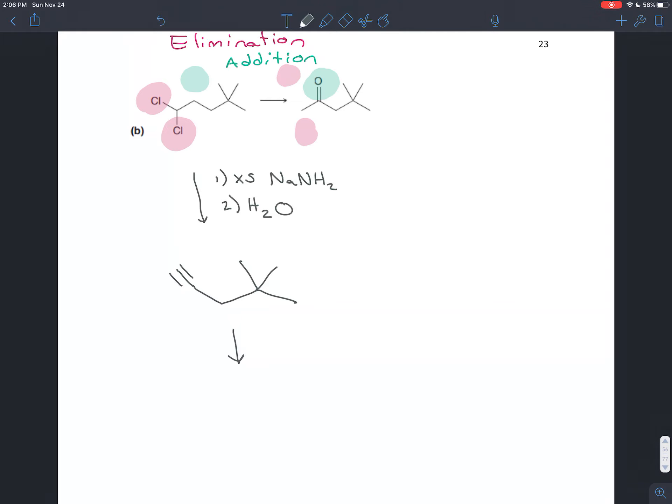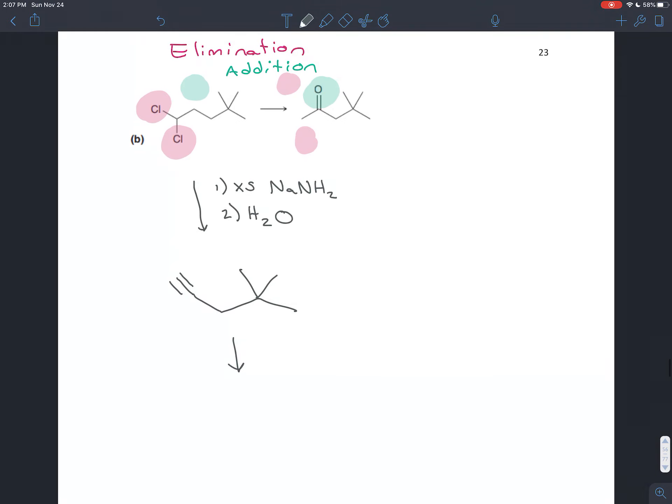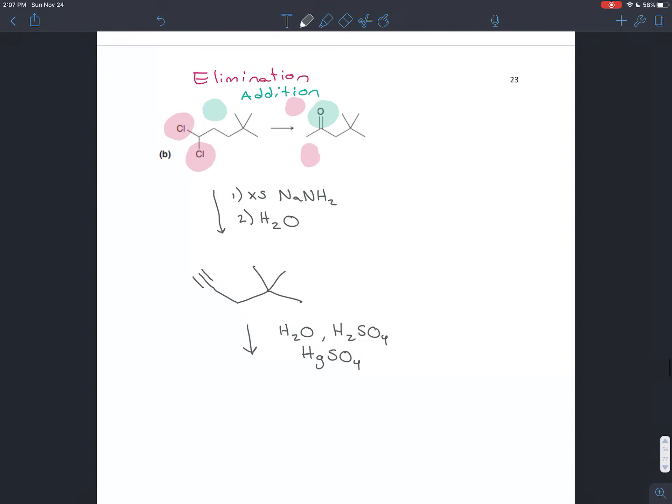Where do we want the double bond to the oxygen? We have a primary carbon on the end and a secondary carbon in the middle. The double bond to oxygen went on the more substituted position, and hydrogen on the less substituted position. That indicates Markovnikov addition. To add H and OH in a Markovnikov way, use acid-catalyzed hydration: water H2O, sulfuric acid H2SO4, and with an alkyne, add mercuric sulfate HgSO4. That gives your product—same molecule, same carbons, just with the ketone there.